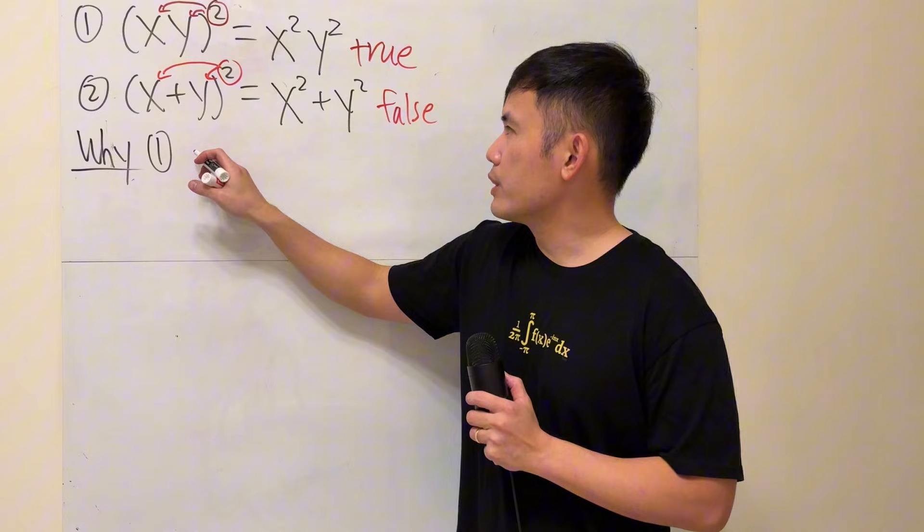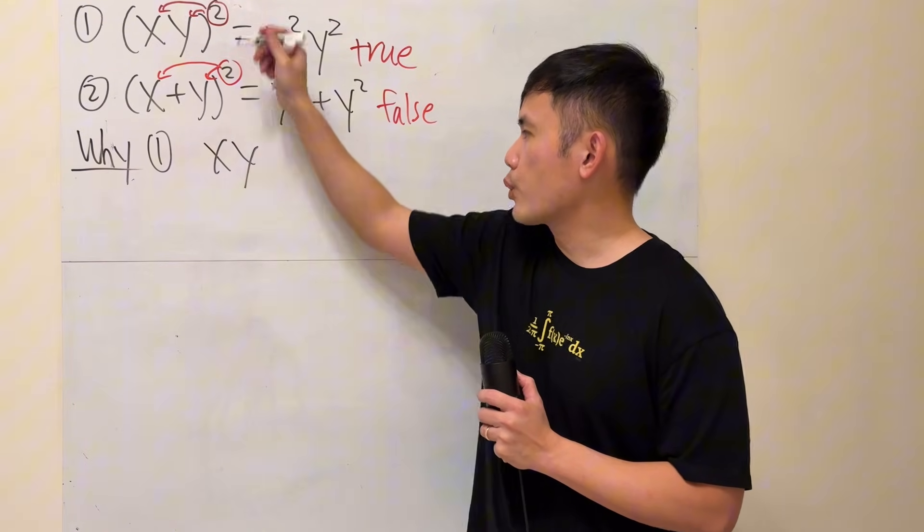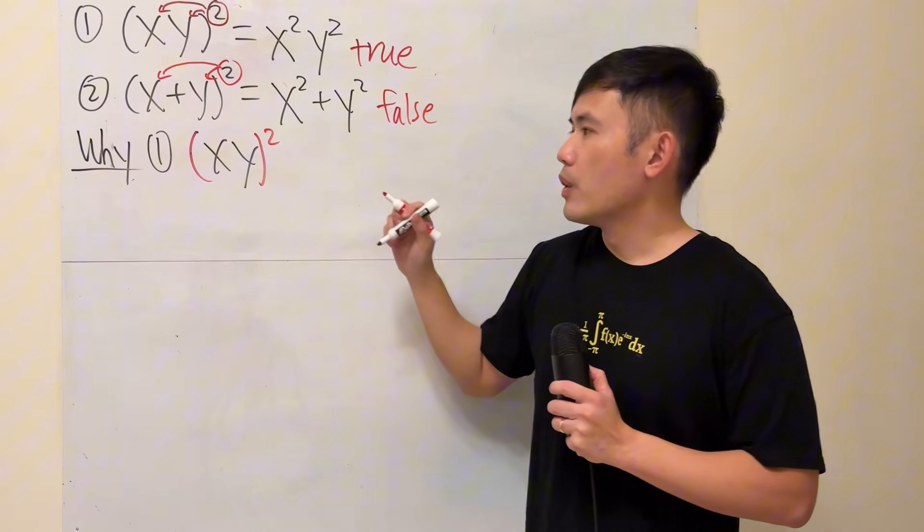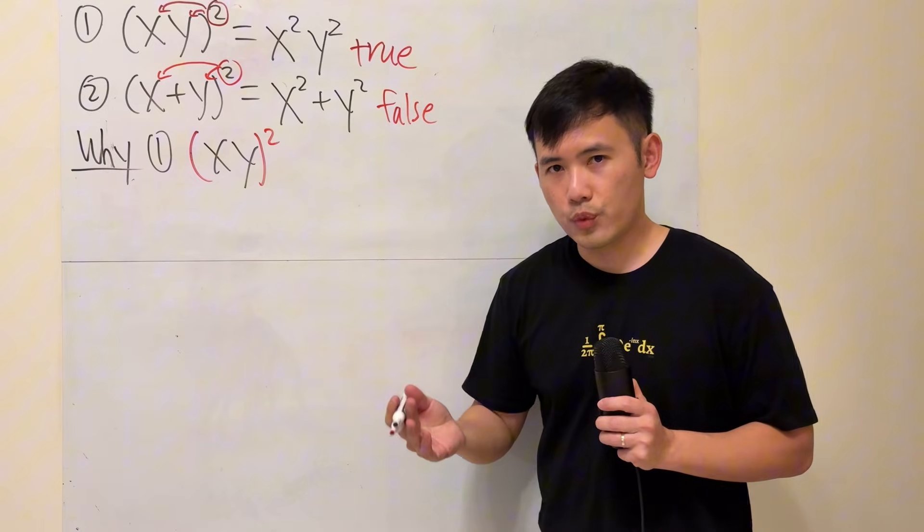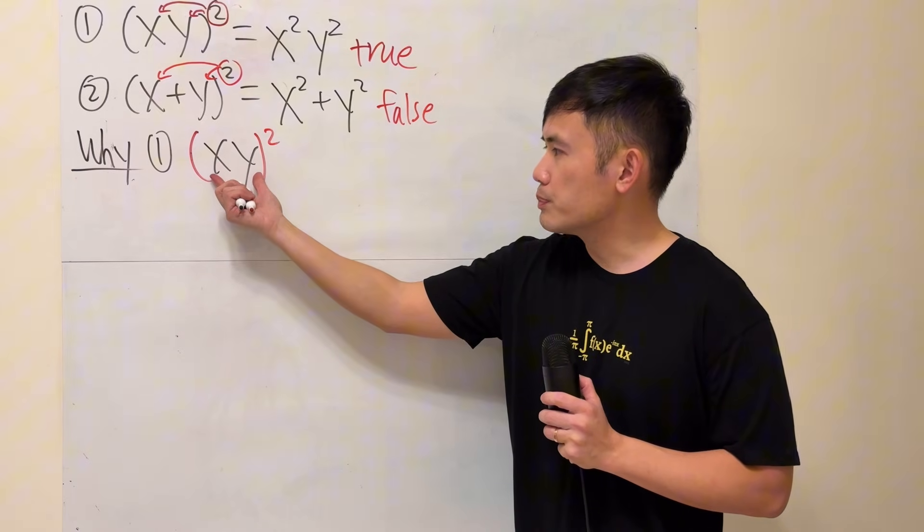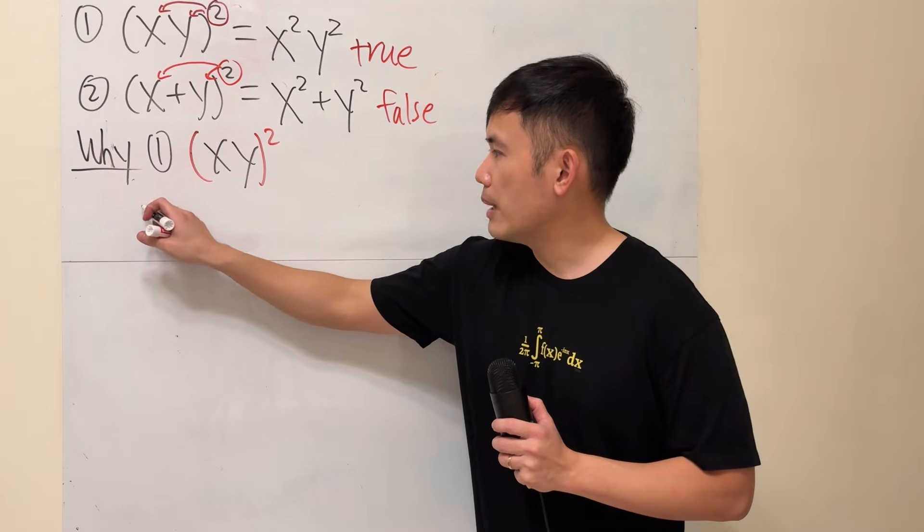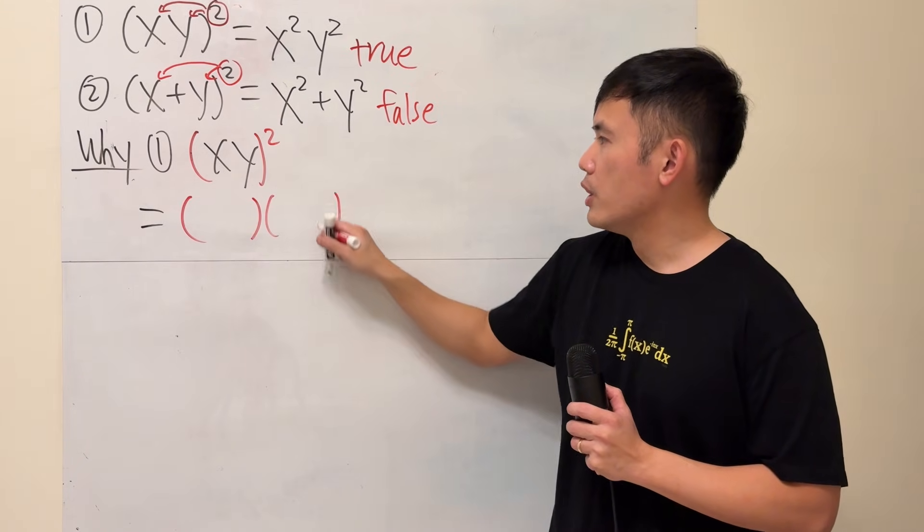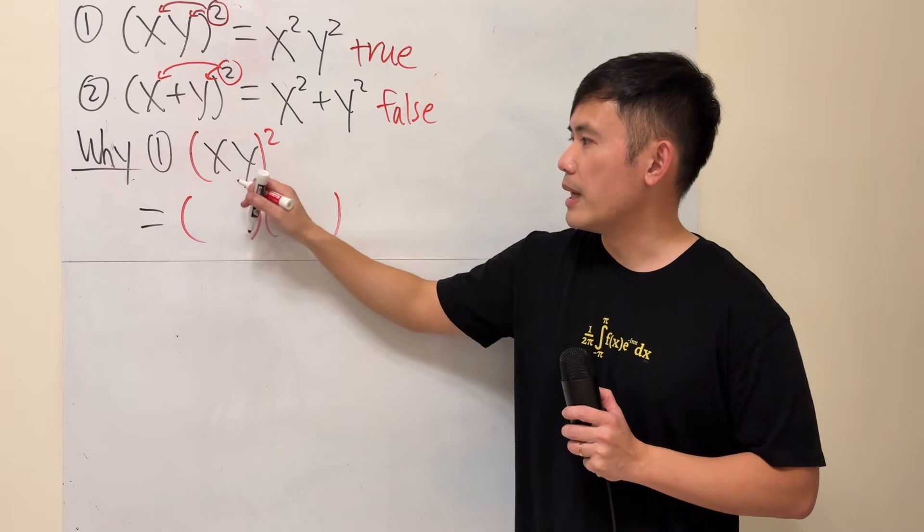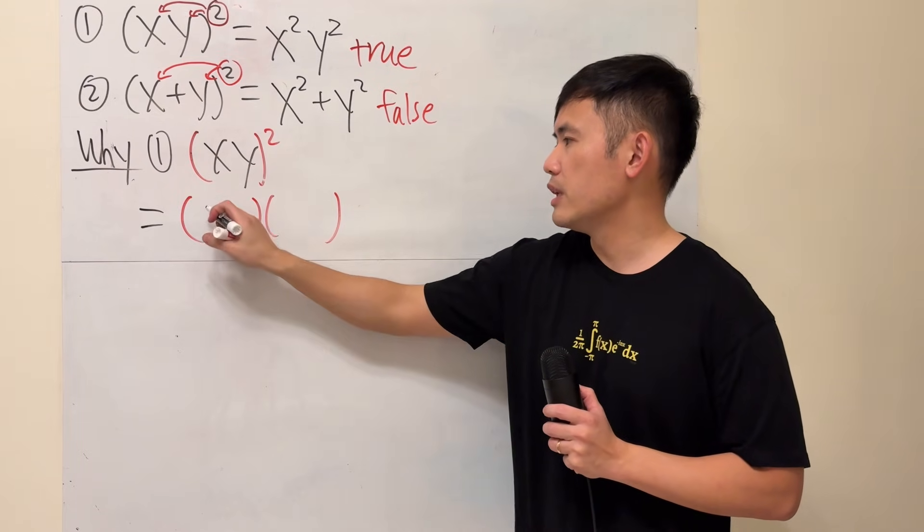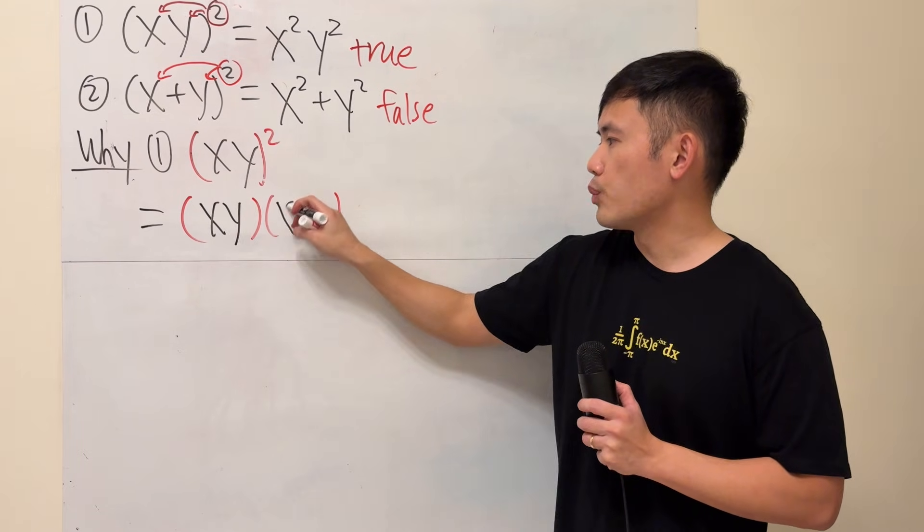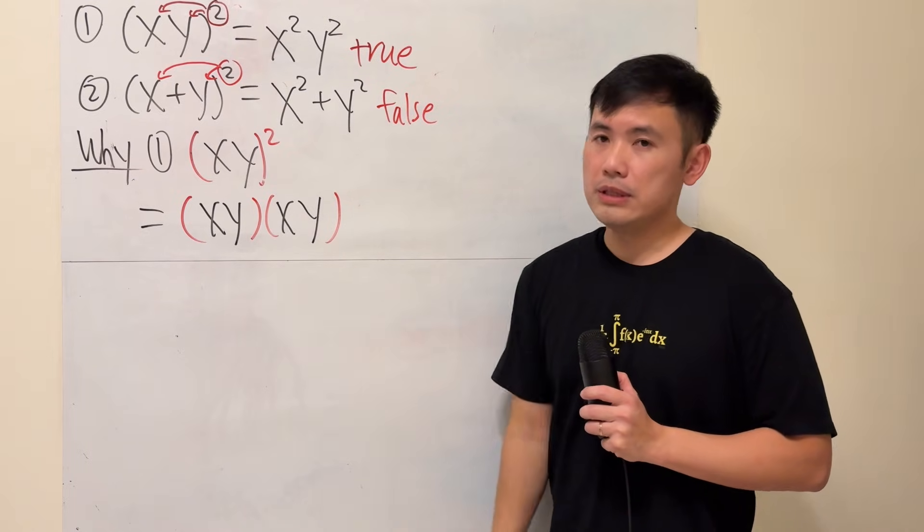Number one, if you look at xy and then square, firstly, what does the square mean? It means that you just put down the inside twice, and then multiply it out, right? So, I'm just going to write it, we have the parentheses, the square is applied to both of them, so just put on the parentheses, and then you have xy and then xy. Parentheses means to multiply.